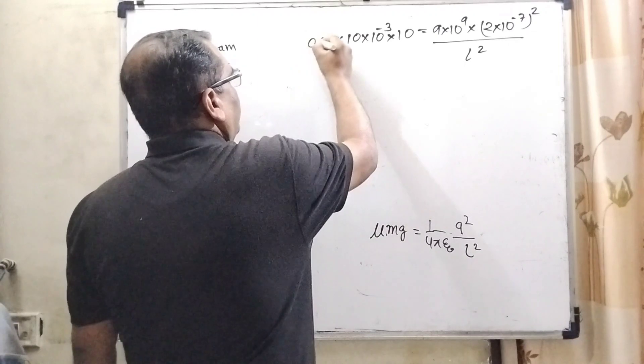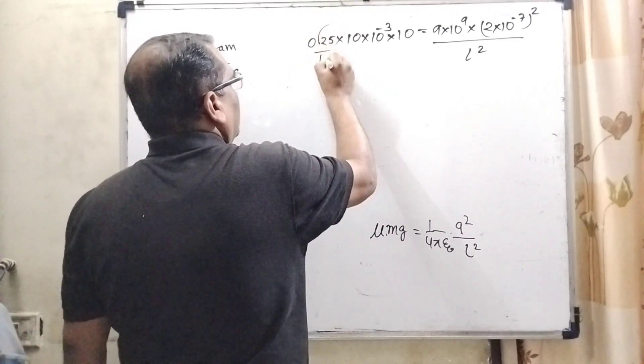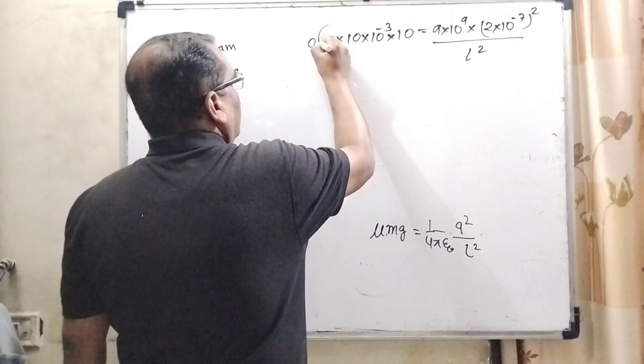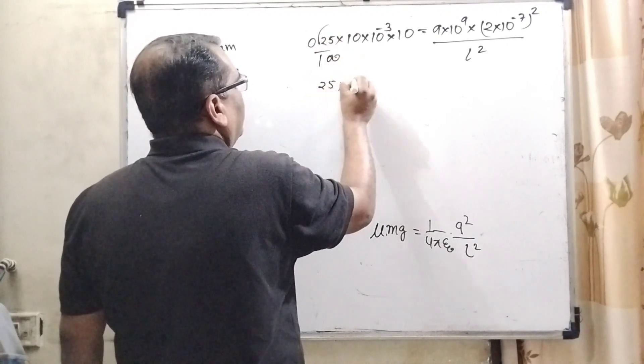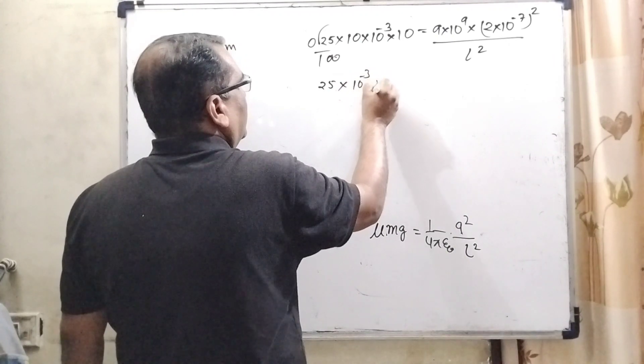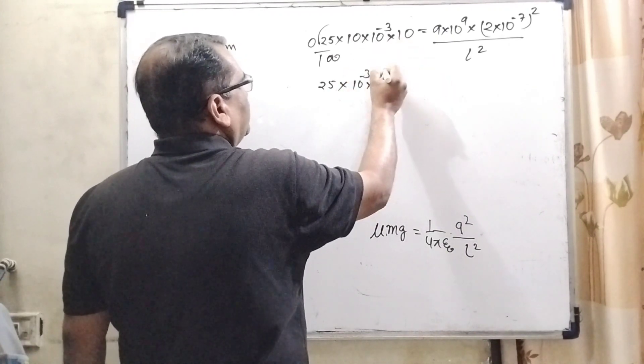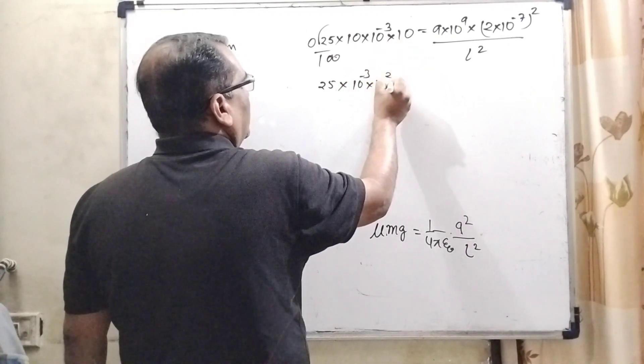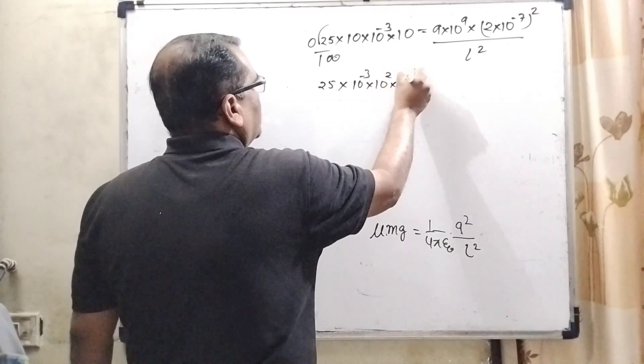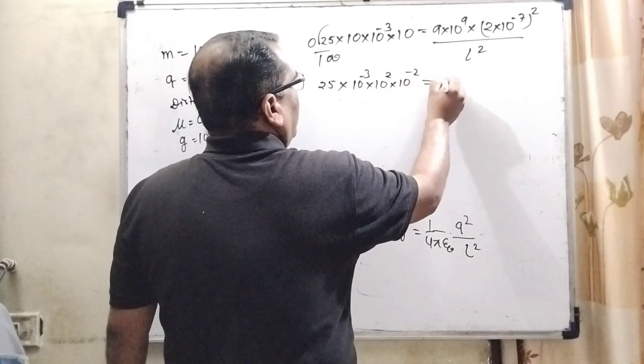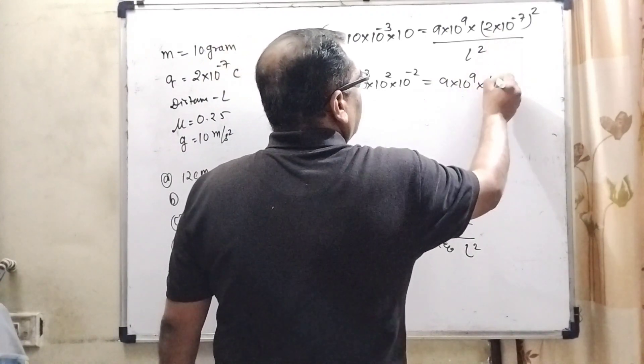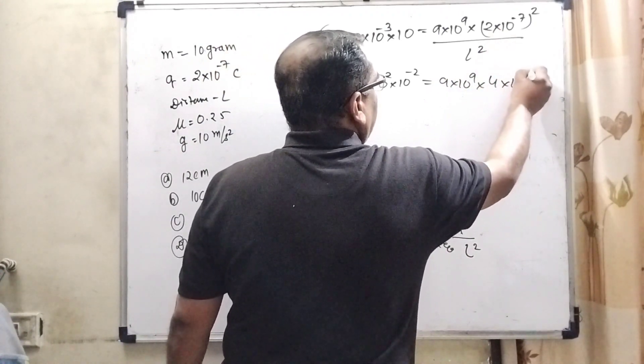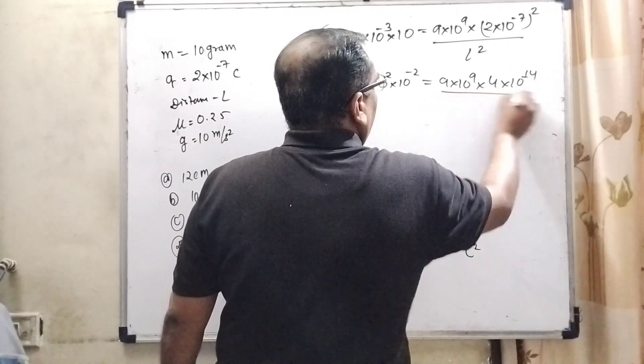Now, let us first convert in this question: 0.25×10⁻³×10¹ = 25×10⁻⁴. Here 2² and 10⁻¹⁴ equals 9×10⁹×4×10⁻¹⁴/L².